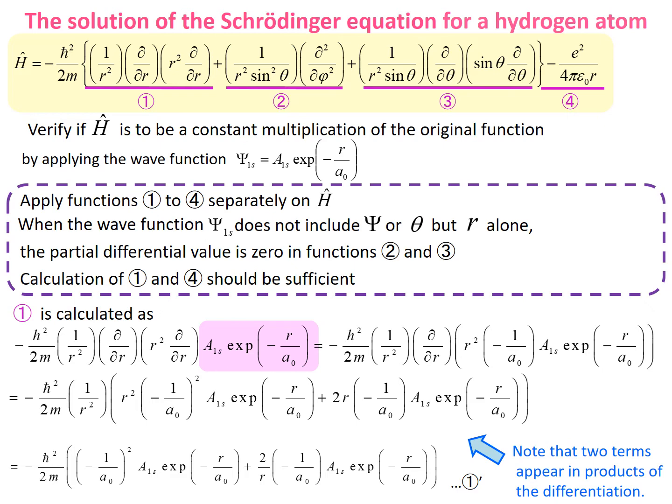For the calculation, we should firstly apply the wave function on each member to obtain the sum. The 1s orbital function we use here does not include the coordinates of theta or phi, it only includes r, which means that the operators in the second and third members' terms are differential operators of theta or phi, which would yield zero when applied. Therefore, it should be sufficient for us to calculate the first and fourth terms of the operator.